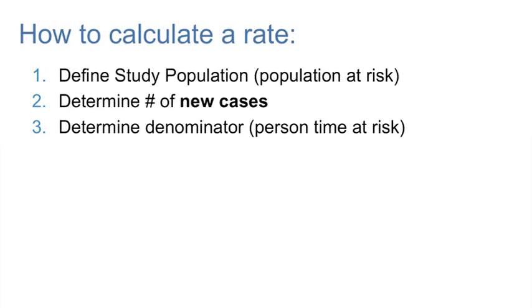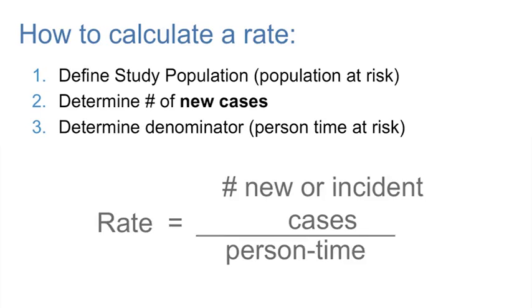The formula for rate is as follows. The rate is the number of new, or incident cases, divided by person time.